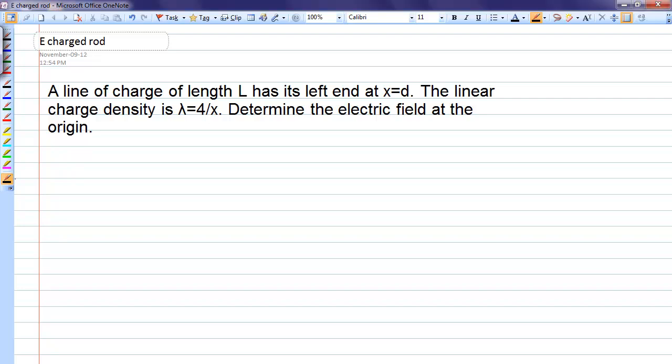In this problem, we're going to find the electric field due to a line of charge with non-uniform charge density. We'll put the line of charge on the x-axis. One end of the rod is a distance d from the origin, and the length of the rod is L.